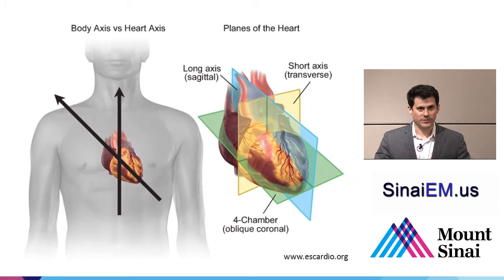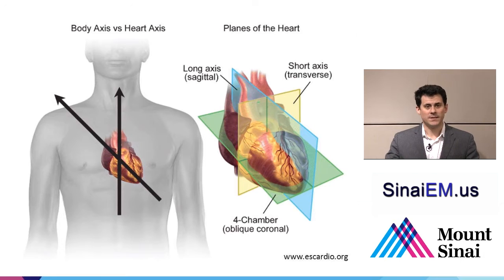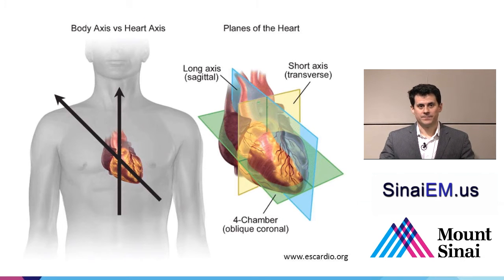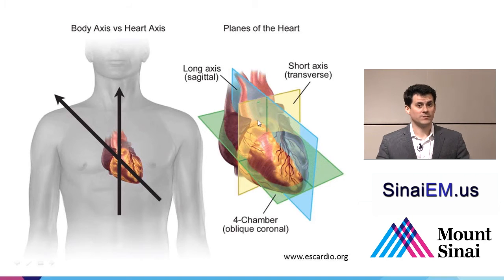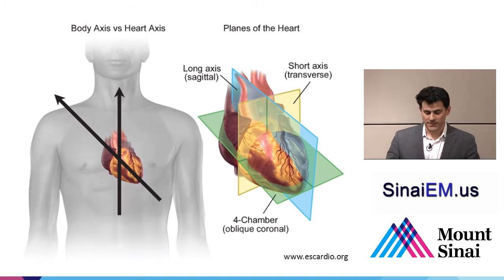Let's have a look at the axes of the heart. We're familiar with the axis of the heart in terms of EKGs and the electrical vector. There's a long axis along this plane oriented diagonally across the chest. Anatomists and cardiologists have defined several planes of the heart that we use when we talk about ultrasound views.